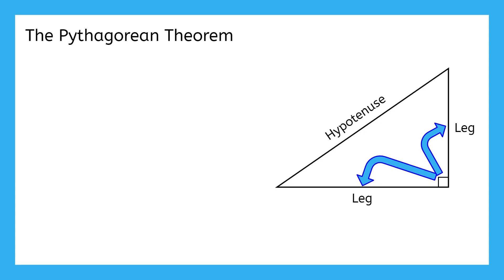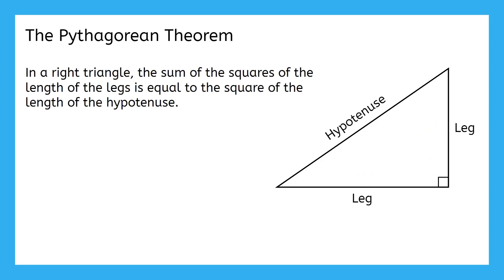The Pythagorean theorem says, in a right triangle, the sum of the squares of the length of the legs is equal to the square of the length of the hypotenuse.